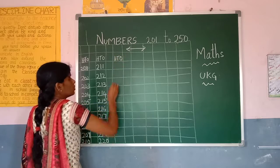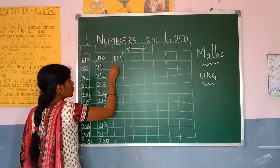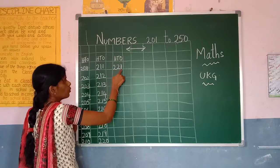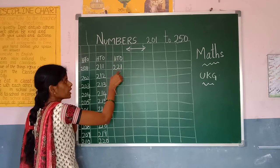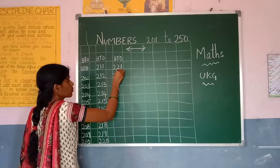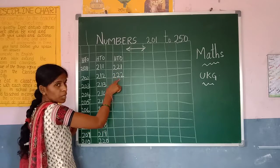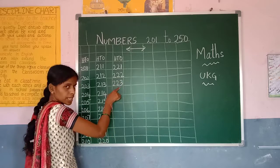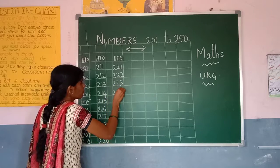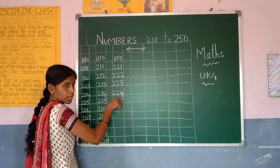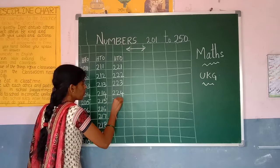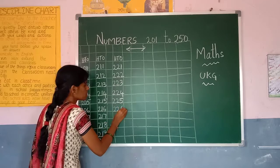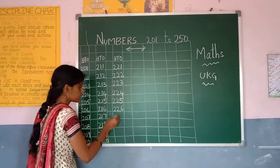Very good! Now how can you write 221? 221. 222. 223. 224. 225.